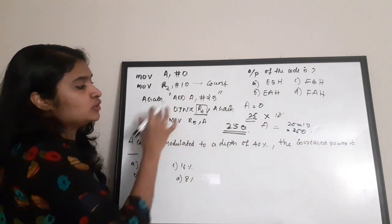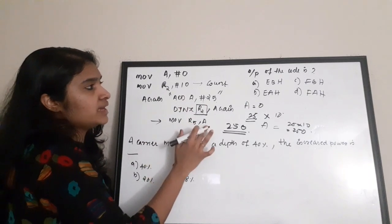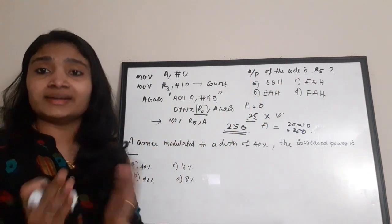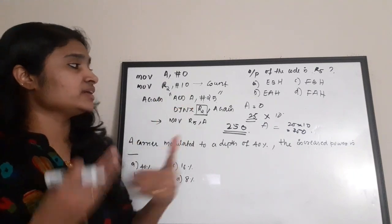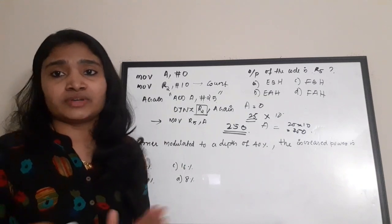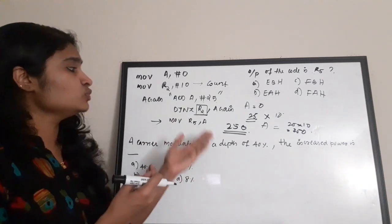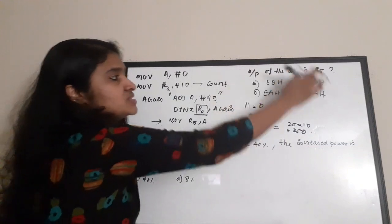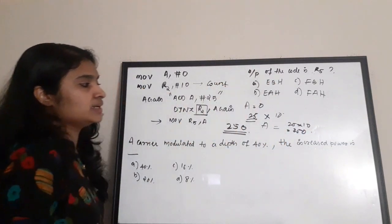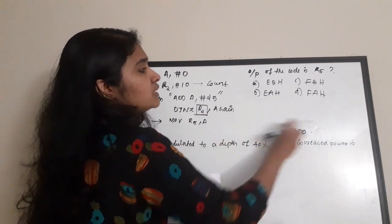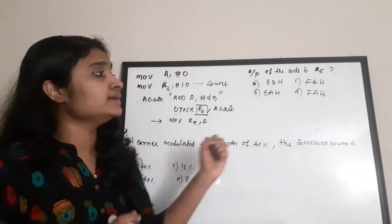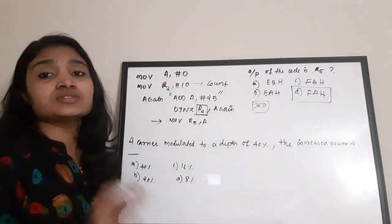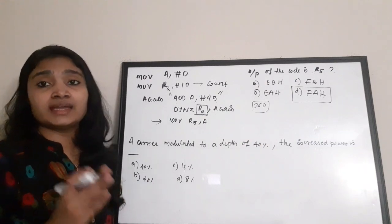When you jump out of the loop the next instruction is 'MOV R5, A'. The question is: what is the output of the code in R5 register? Whatever the result of this addition is, it will be present in R5 — whatever the value present in A is getting moved to R5. The content of R5 is 250, but the answer is given in hex. The hex equivalent of 250 is FAH. So the correct answer for this question is option D, which is FAH.